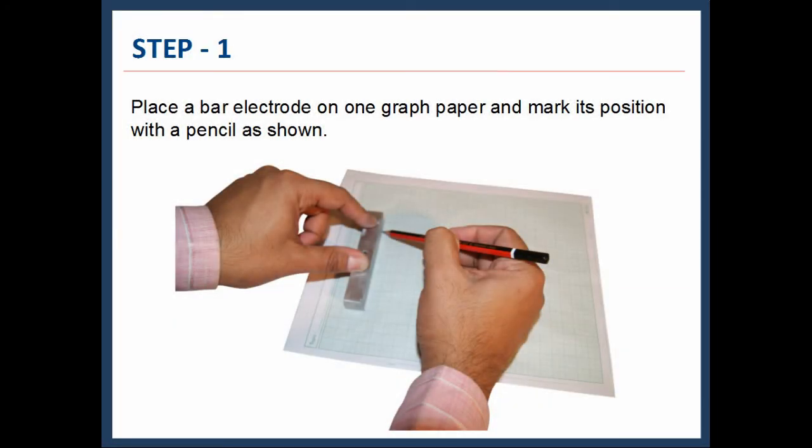Now we will look into how the experiment will be performed step by step. In the first step, place a bar electrode on one graph paper and mark its position with a pencil, as shown.